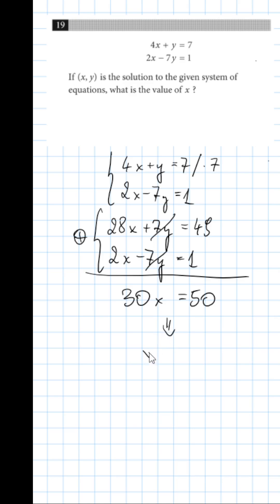So from this, the answer is x equals 50 over 30, which is 5 over 3.